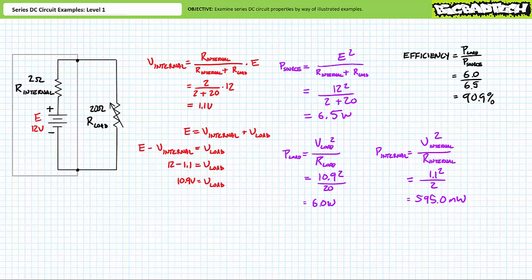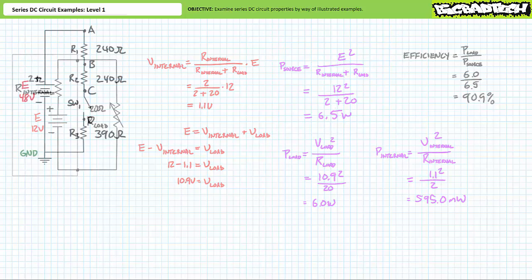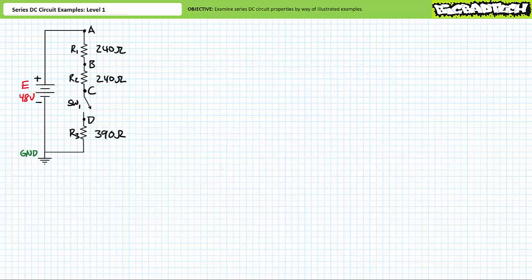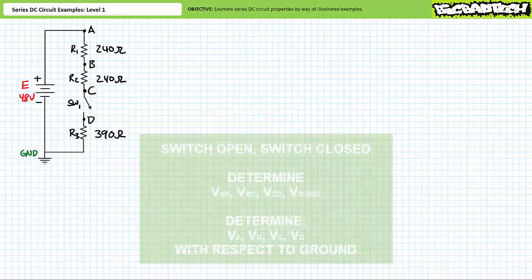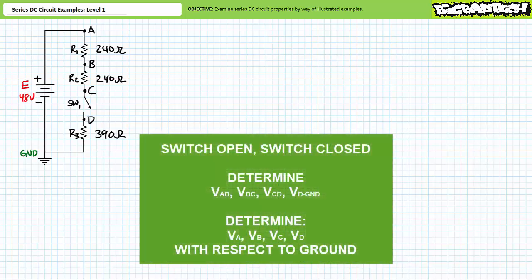Our last illustrated example problem features a 48 volt source in series with three resistors and a switch. We're presented with two scenarios: scenario one, the switch is open; scenario two, the switch is closed. We're being asked to solve for the following voltages: VAB, VBC, VCD, and VD with respect to ground. We're also being asked to solve for VA, VB, VC, and VD with respect to ground. By all means pause the lecture and try this on your own. If you're tracking, you should have obtained the following results.